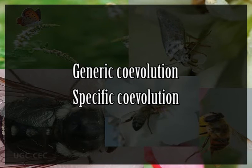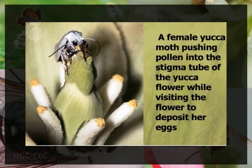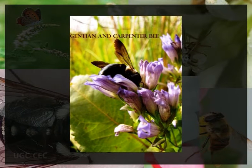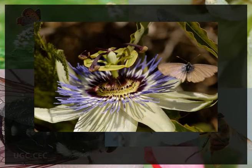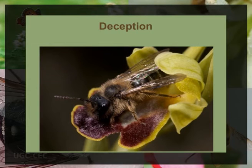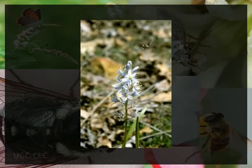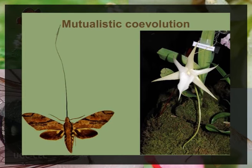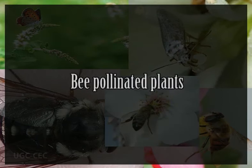The co-evolutionary interactions between plants and their pollinators are generally categorized as generic co-evolution and specific co-evolution. Insect pollination offers some of the more remarkable examples of harmony between species, and co-evolution has been offered as the means by which such harmony has come about. Common examples of plant-pollinator relationships include: dependence as in yucca and yucca moth; floral sonication as in gentian and carpenter bees; benefit to flowers against herbivory as in passion flower and butterfly; mimicry as in orchids and bees; and mutualistic relationships between moth and orchid, or fly and flower.